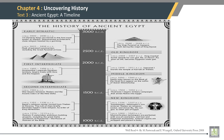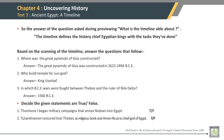The history of Ancient Egypt. This chart is about early dynasty. The answer to the question asked during previewing — what is the table about? — is that the chart defines the history and chief Egyptian kings with the tasks they have done.